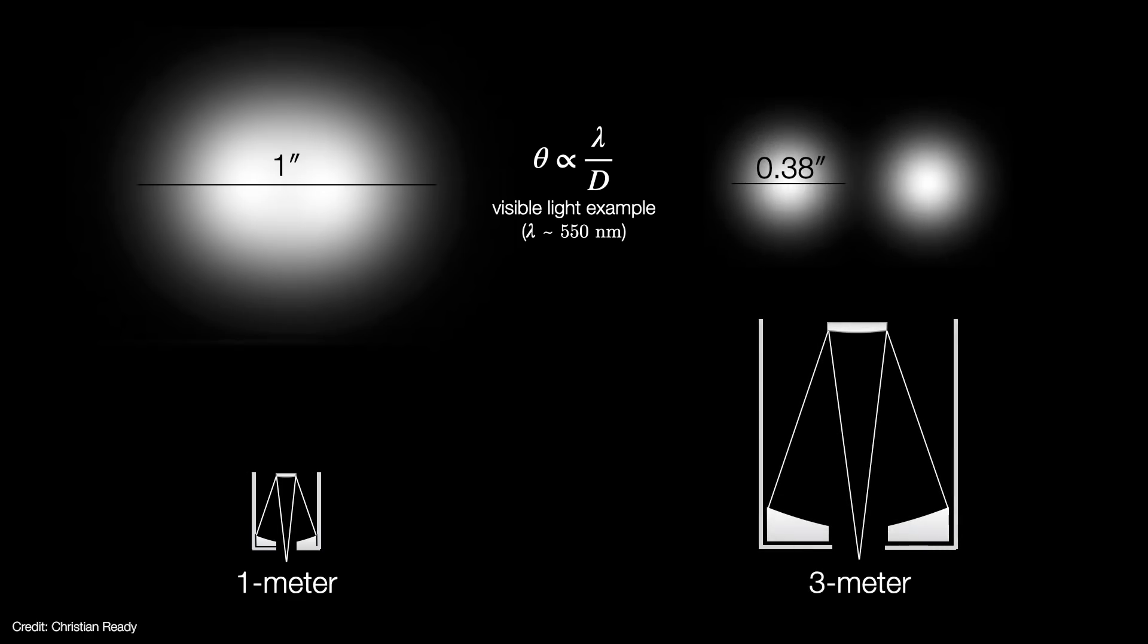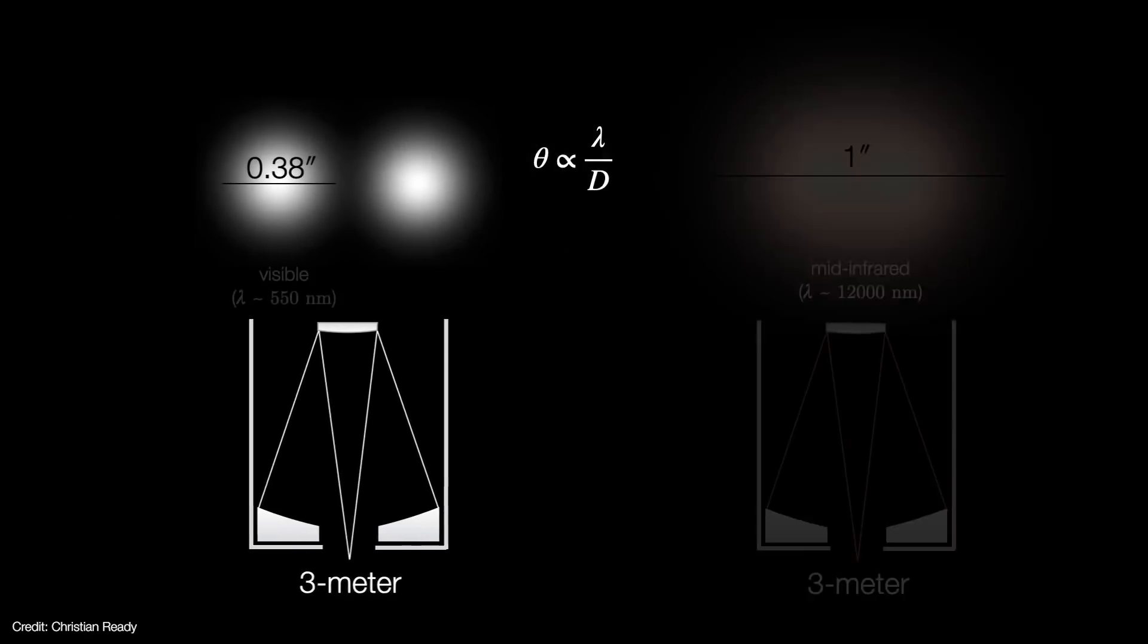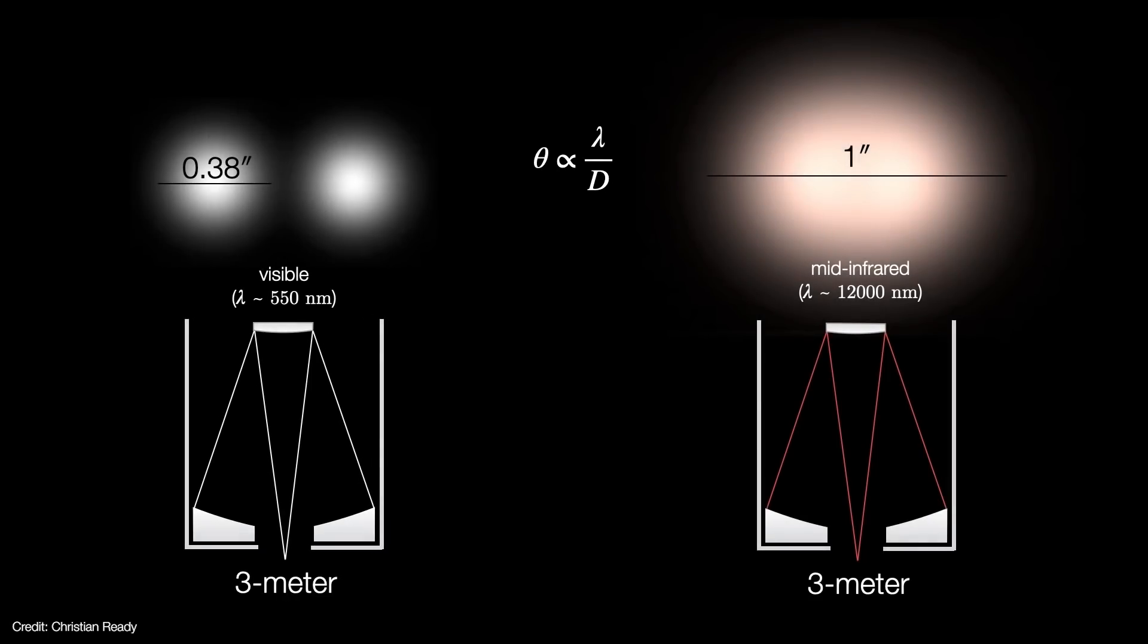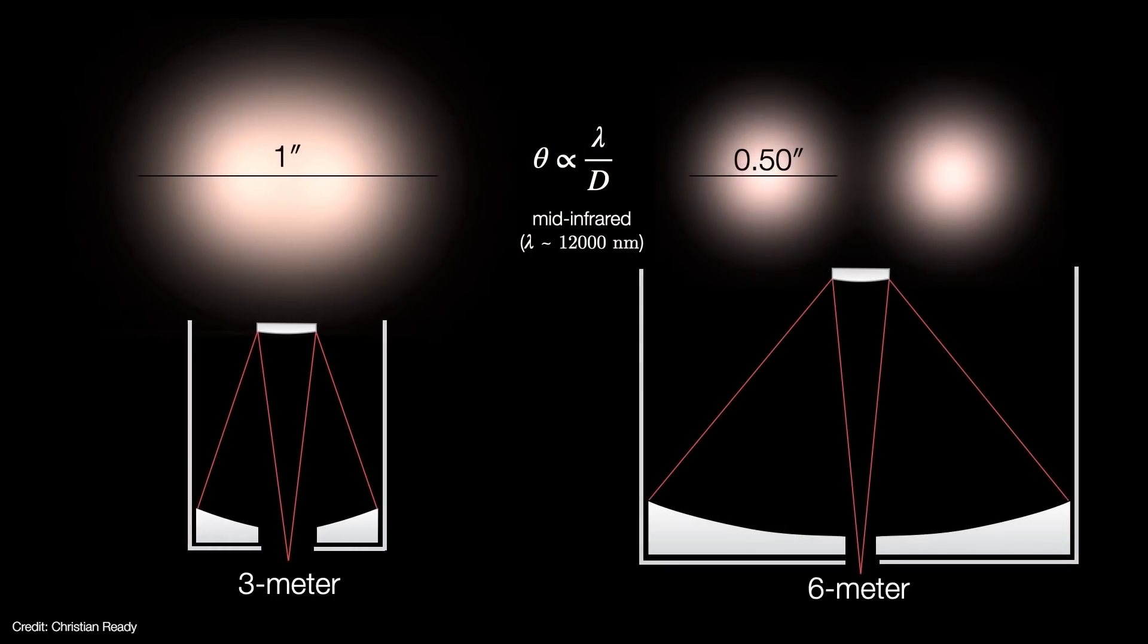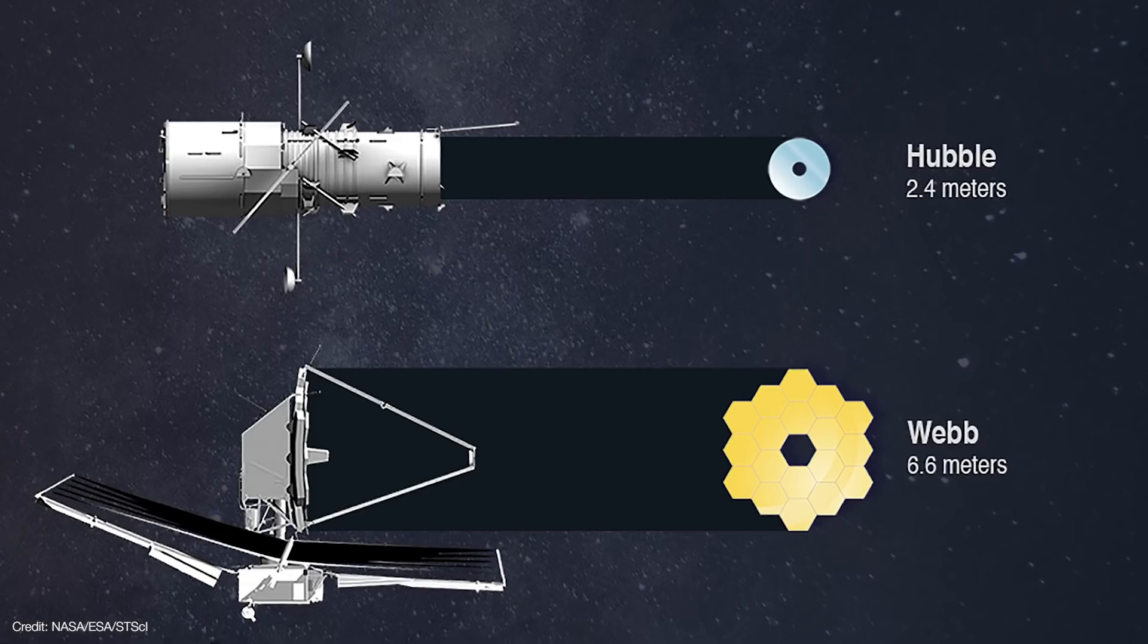Resolution is a measure of how small an angle a telescope can see down to and still distinguish details from each other. The larger the mirror's diameter, the smaller an angle it can discern. However, the longer the wavelength of light that the telescope is looking at, the larger the smallest angle becomes and the lower the resolution the telescope gets. The only way to overcome this limitation is to make the mirror even larger. At six and a half meters, Webb achieves roughly the same resolution in the near-infrared as Hubble achieves in the visible spectrum with its smaller mirror.